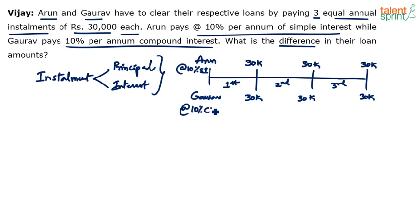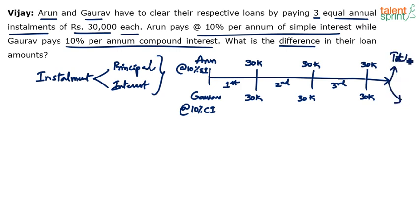Remember the calculation is 10% SI for Arun and 10% CI for Gaurav. The total amount that each one of them has paid at the end of three years is 90,000 rupees — 30,000 three times. But don't get confused and say the total paid is simply 30 times 3 equals 90,000, because there is interest involved.